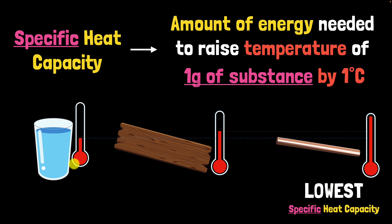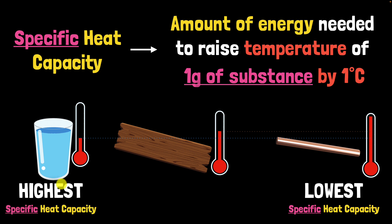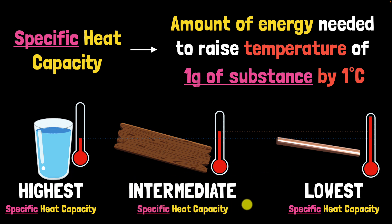On the other hand, water's temperature increased the least. So it must be very hard to increase the temperature of one gram of water by one degree Celsius, meaning it should take the highest amount of energy — so water should have the highest specific heat capacity among the three. And wood will have a specific heat capacity somewhere in between, so it'll have an intermediate value.